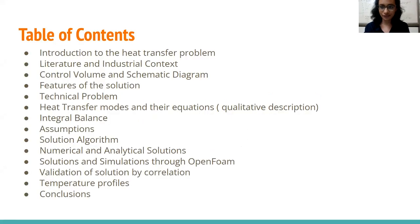This is our table of content that we will be walking you through. Firstly, we will be introducing our heat transfer problem then giving you the industrial context of the problem followed by a control volume and schematic diagram and features and layers of the solution. We will then present our problem as a technical textbook problem and present the heat transfer modes and their quantitative equations. This helps us to arrive at the numerical and analytical solution. We will be concluding by a simulation on OpenFOAM that will give us the temperature profile and other variables. We will then correlate our results through validation by external sources and then provide the conclusion for the project.